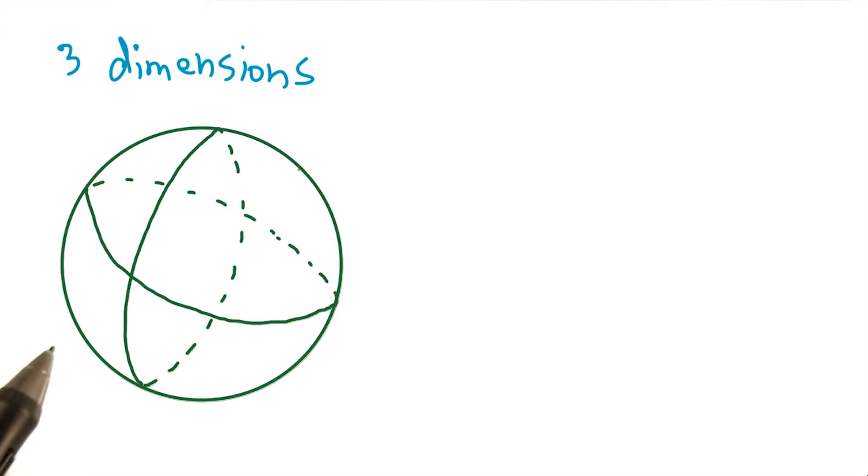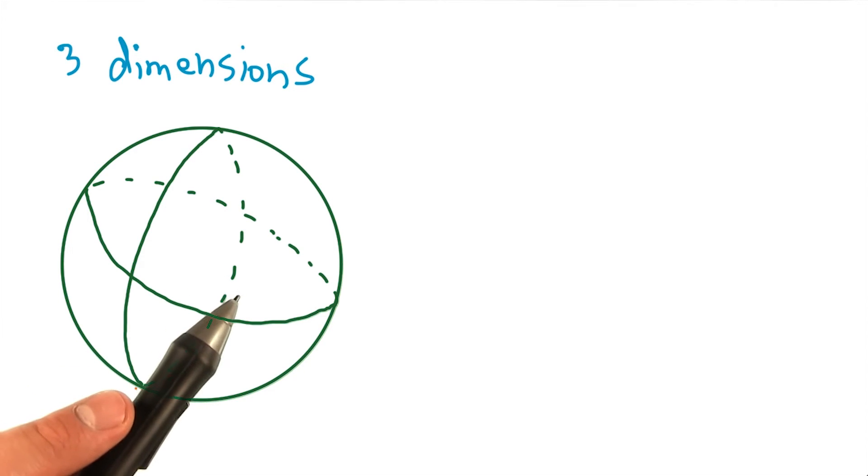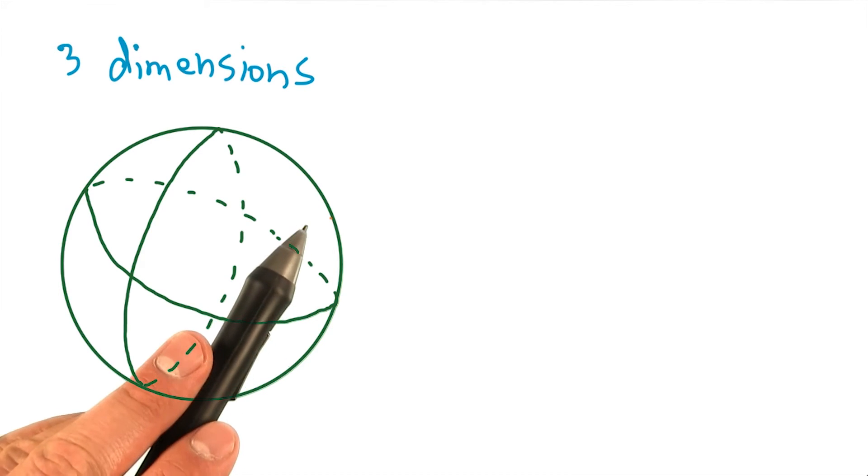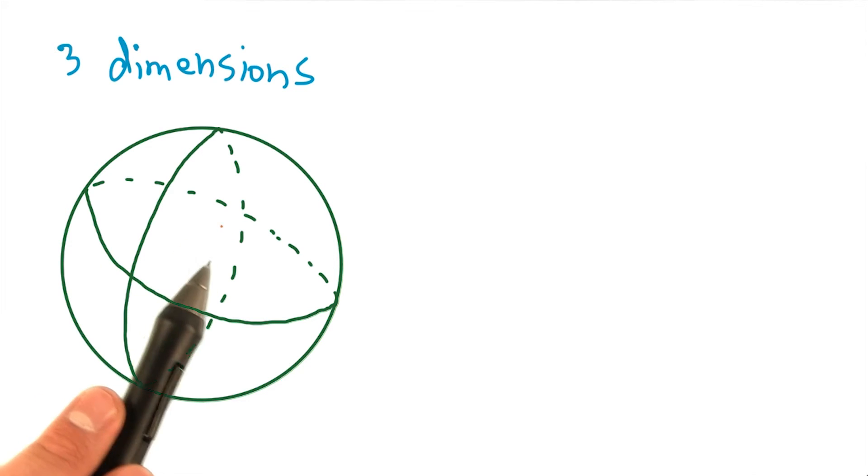One approach that you could take, and is often used out there, is to simply render a globe, or a three-dimensional object, in a web page, using three-dimensional graphics. But this has its own set of complexities, in addition to the fact that you can usually only see one face of the globe at a time.